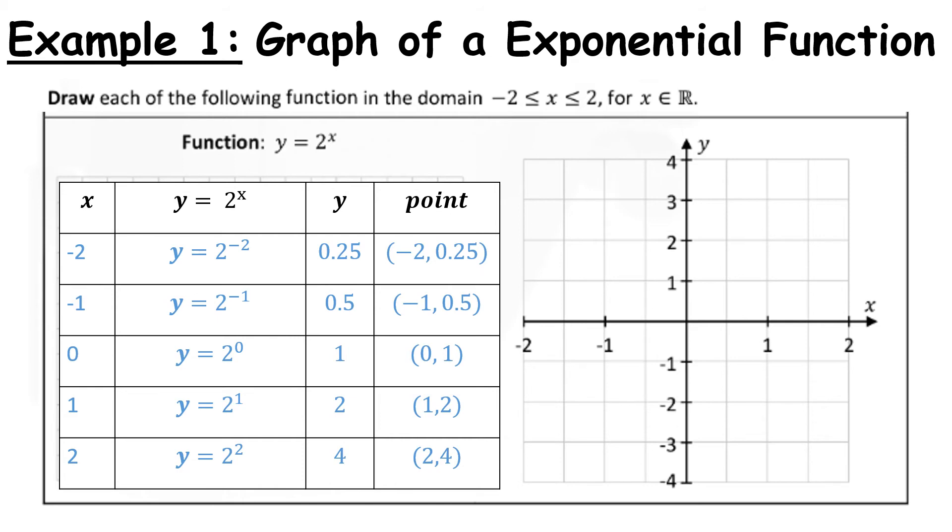Now we have a series of points. Let's see what the graph looks like. We plot the points: (-2, 0.25), (-1, 0.5), (0, 1), (1, 2), and (2, 4) on the graph.